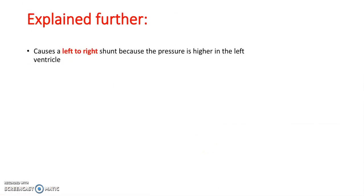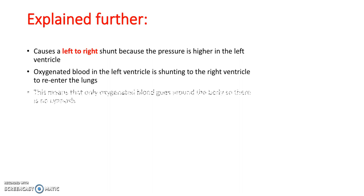A VSD causes a left-to-right shunt because the pressure is higher on the left side of the heart, in the left ventricle. So it causes oxygenated blood to move into the right ventricle where the deoxygenated blood is. This means that only oxygenated blood goes around the body, so there's no cyanosis — that's why it's an acyanotic heart defect.